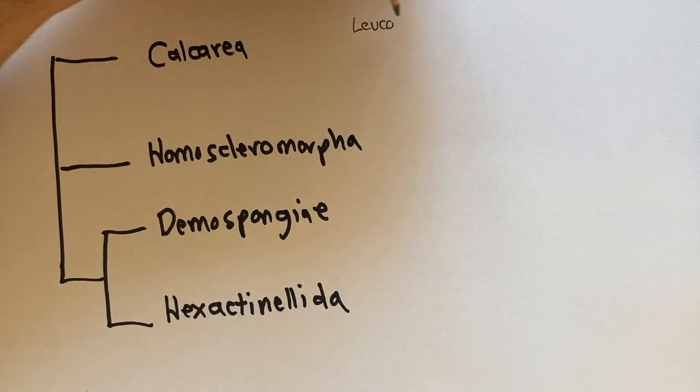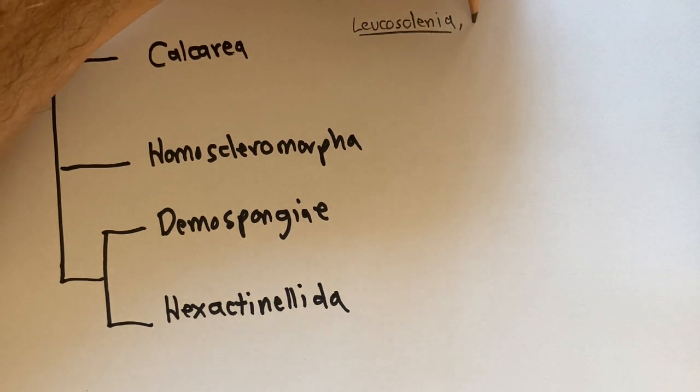The first animal we'll look at is a species of Leucosolenia which I collected from a dock in Alamitos Bay in Long Beach.